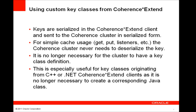Now, in Coherence 3.7.1, the Coherence Extend client does the key association check and partition assignment processing. When the cluster receives the key, it no longer needs to deserialize it for partition assignment. This improves cluster performance, and the cluster no longer needs an implementation of the key class just for simple gets and puts. This is especially useful for custom key classes used by .NET and C++ Extend clients. In many cases, it will no longer be necessary to implement a parallel Java implementation for those .NET or C++ classes.